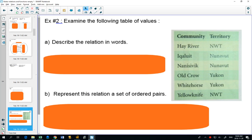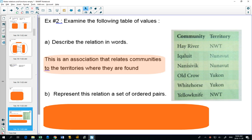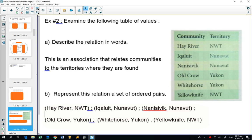Example number two. Describe the relation in words. So we've got a table of values. On the one, it's labeled as community, and the other, it's labeled as territory. This is a relationship or an association between communities to the territories where they're found. I think Nenicevic sounds like the coolest place to live. I like the sound of that place. Whereas Old Crow. Represent this as a set of ordered pairs so we could just write whatever is in the first column of a table of values. That is your independent variable.